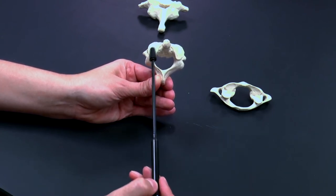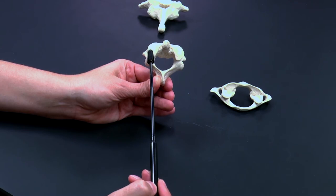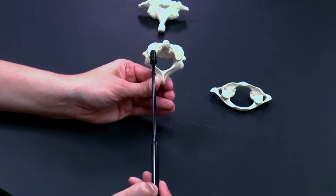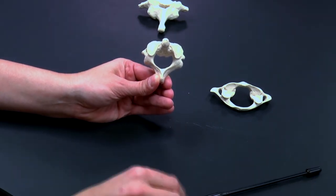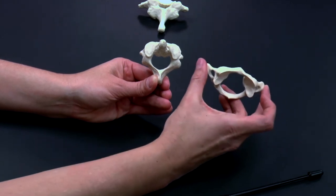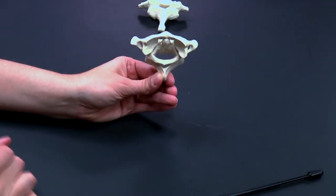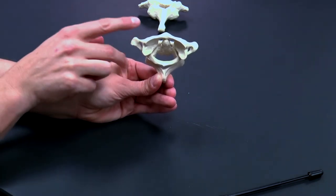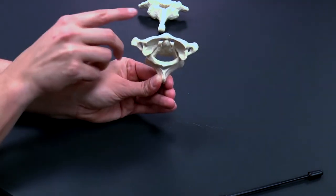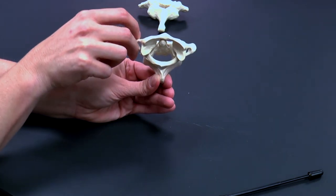So this is called C2, and it's also called the axis. And it enables axial rotation of the head. So if you take C1, the atlas, and put it on C2 like that, then you can see that that joint, that protrusion, that dens, will enable the head to rotate on its axis.